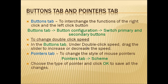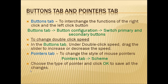Under the Buttons tab, under double-click speed, drag the slider to increase or decrease the speed of the double-click. For the Pointers tab: to change the style of the mouse pointer arrow, go to the Pointers tab, then go to Scheme, choose the type of pointer you want, and click OK to save all the changes.